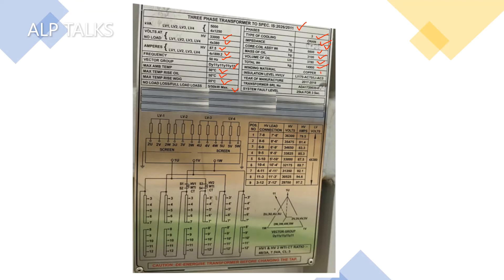Winding material is copper. We have insulation levels here: as it is 33 kV, we have 170 kV BIL and 70 kV power frequency. Similarly for LV we have 3 kV power frequency. Generally for LV we don't have any BIL requirements. Here we have the serial number, and last we have the system fault level: 25 kA for 3 seconds. We have to take care of all the external equipment — bushings, bus bars, and all. So here is the template of the transformer.